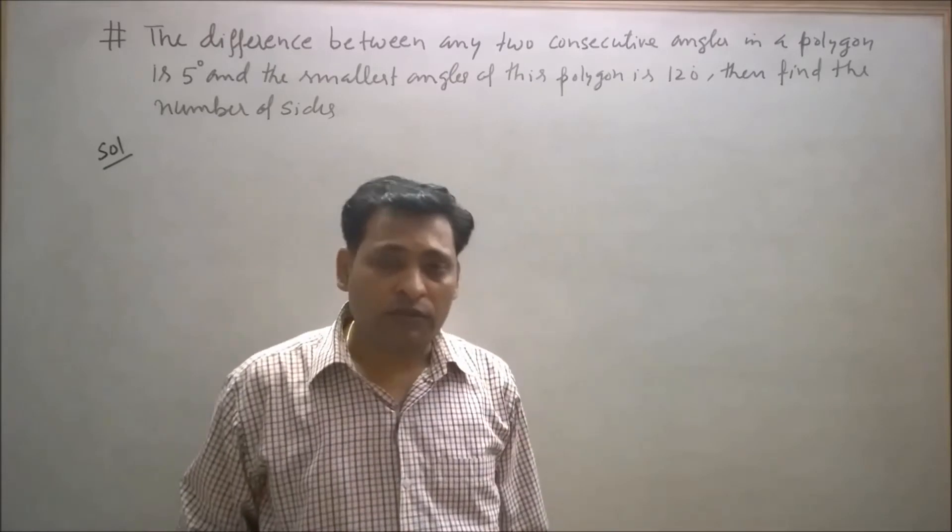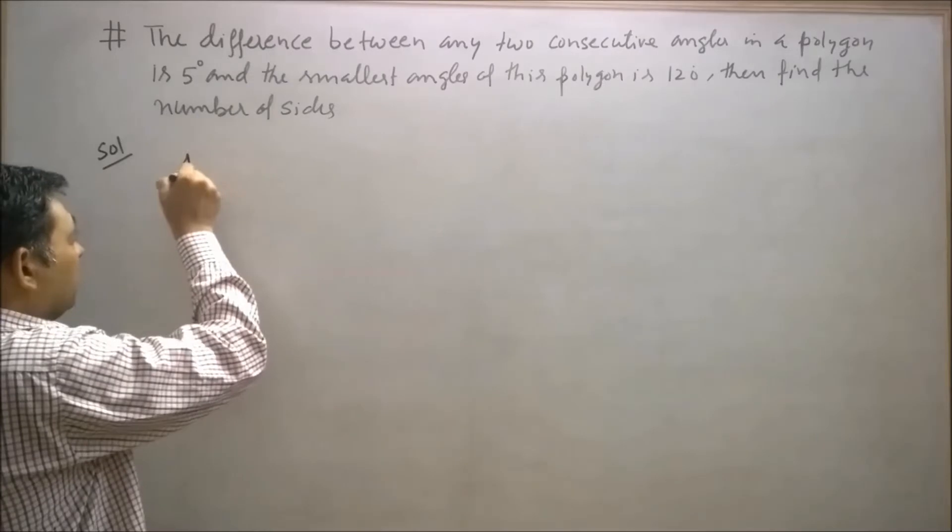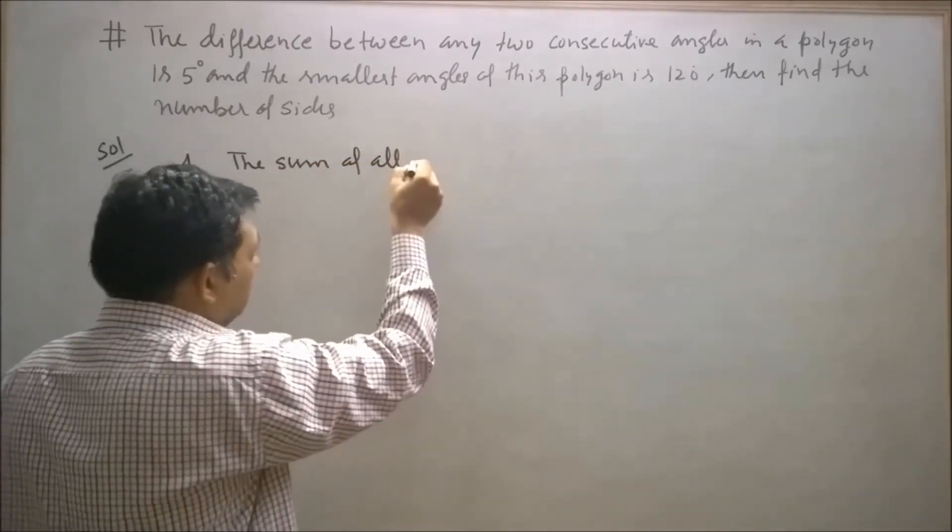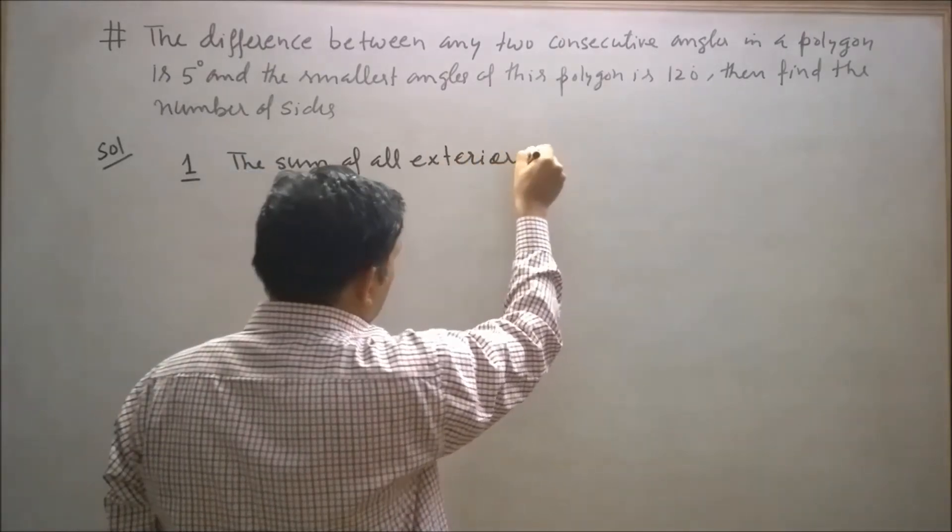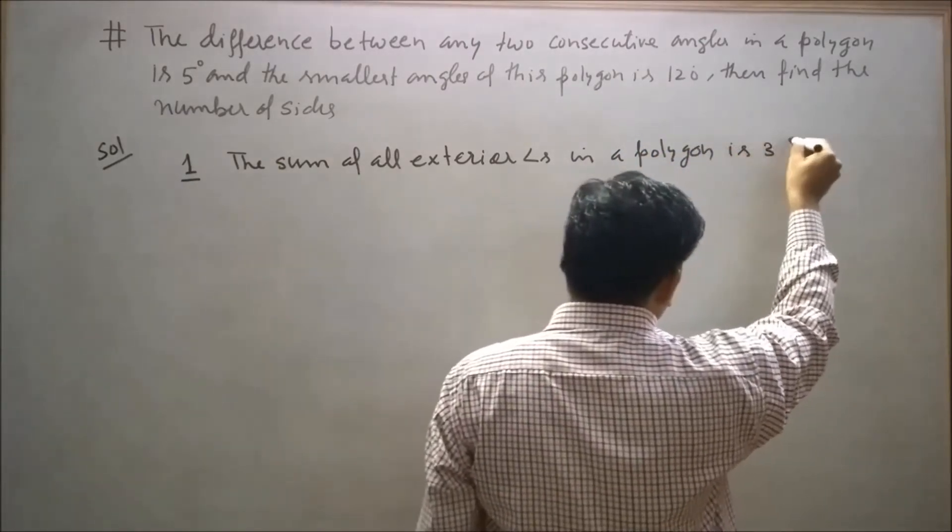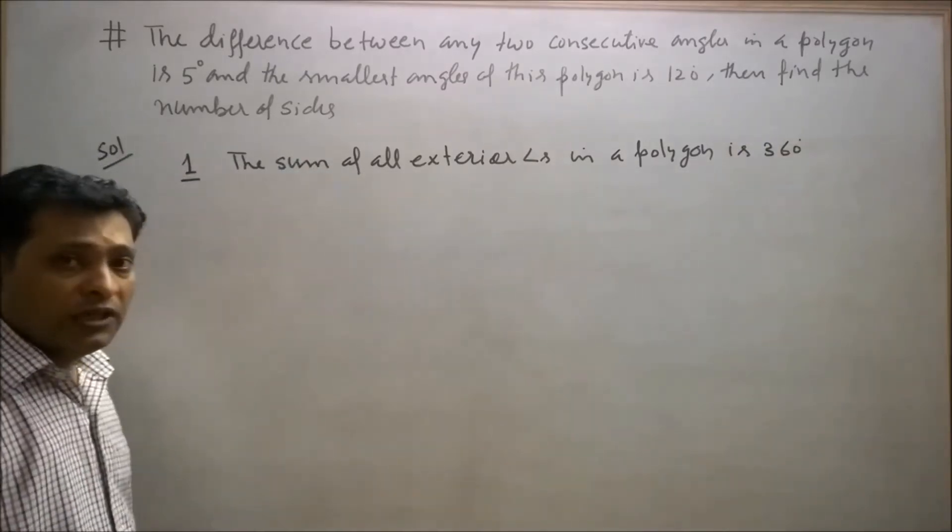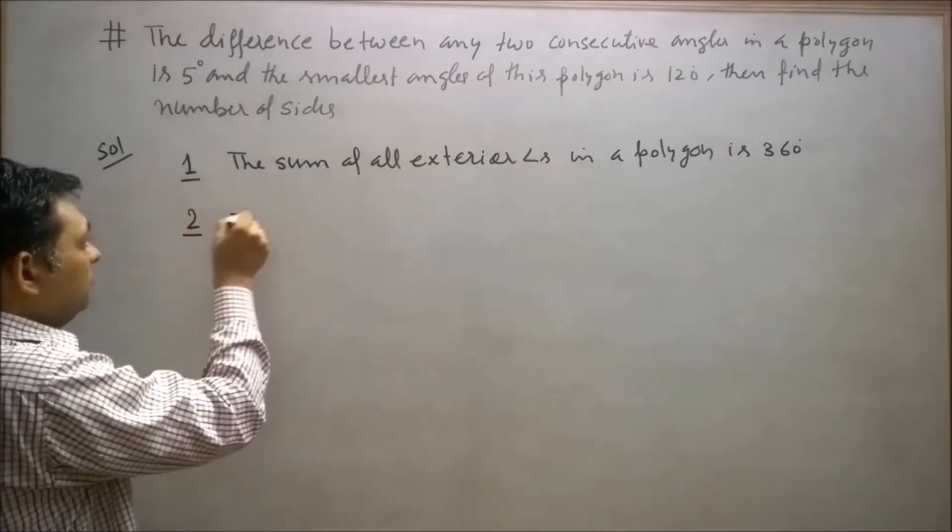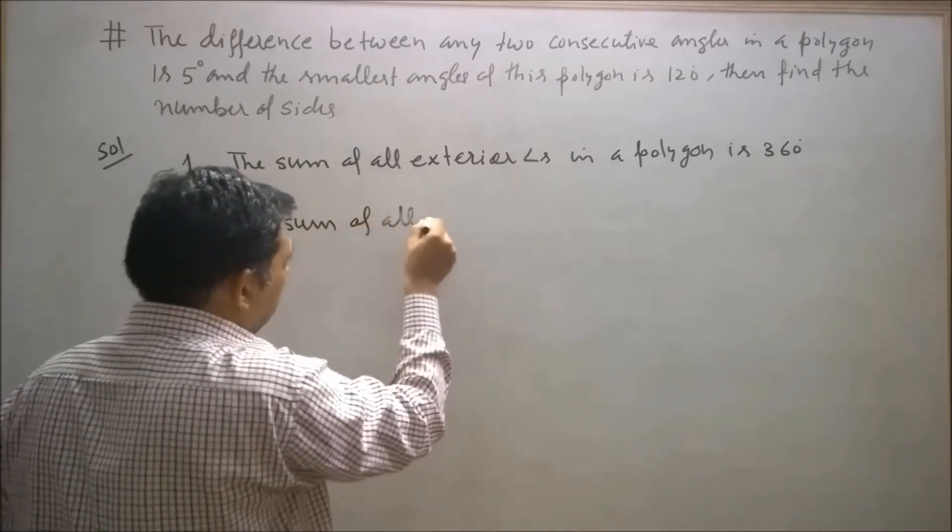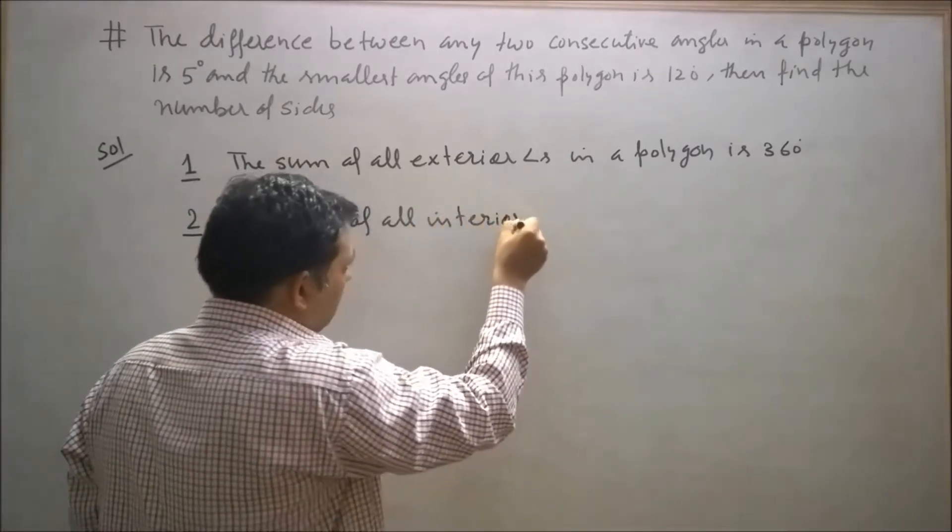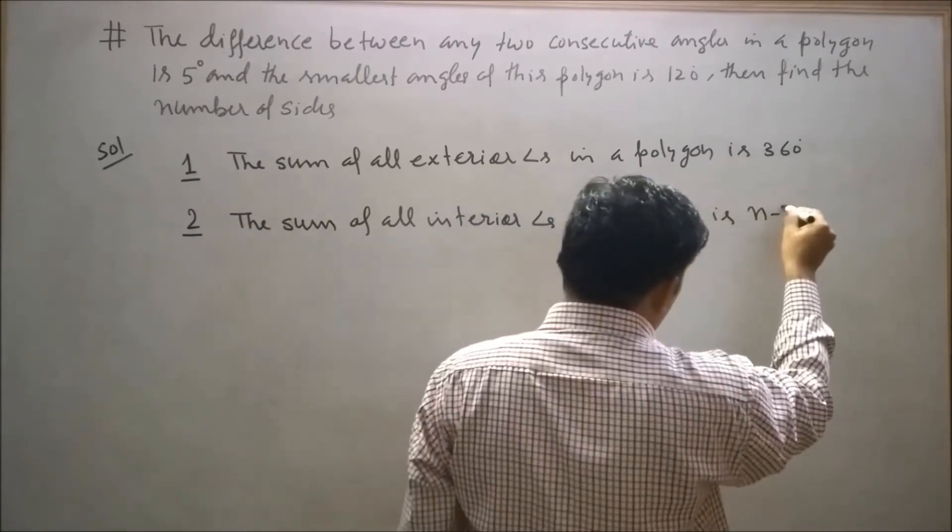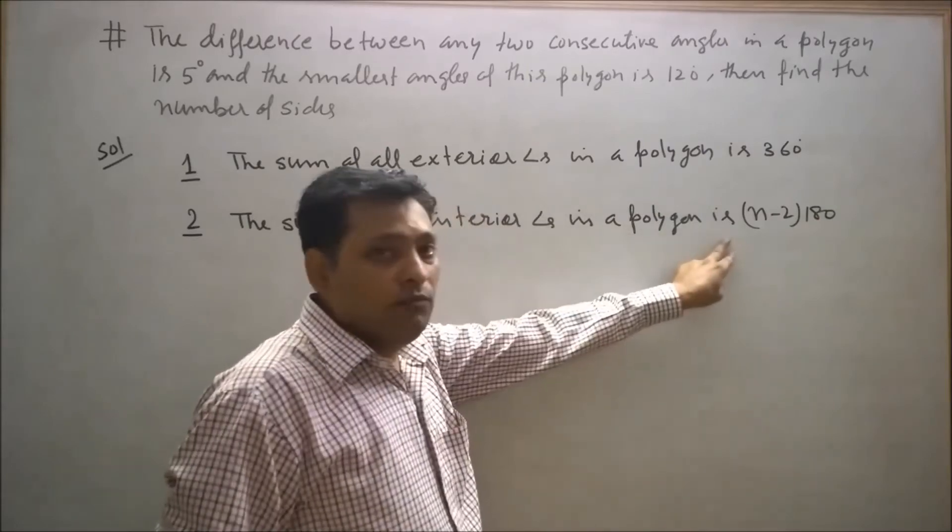I can solve this question using two different approaches. First approach: the sum of all exterior angles in a polygon is 360 degrees. Second approach: the sum of all interior angles in a polygon is (n-2) × 180 where n is the number of sides.